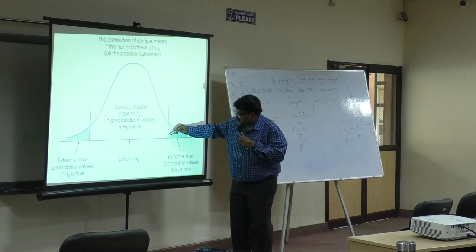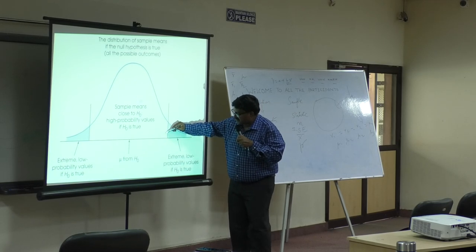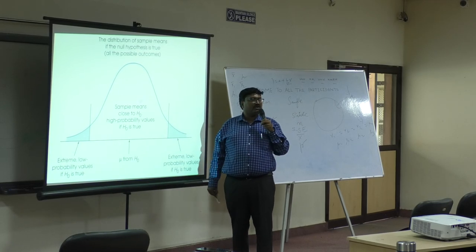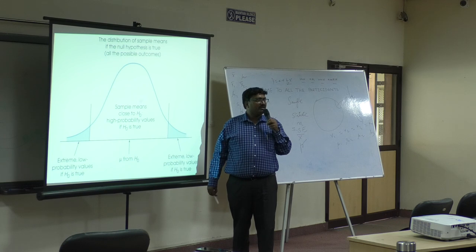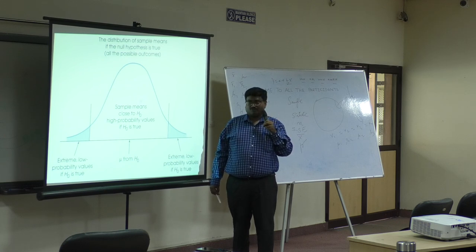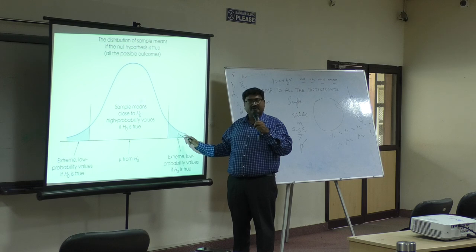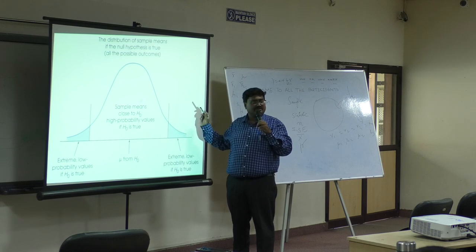This margin — this point is called the critical value. If your calculated value goes beyond it, you say your null hypothesis gets rejected.